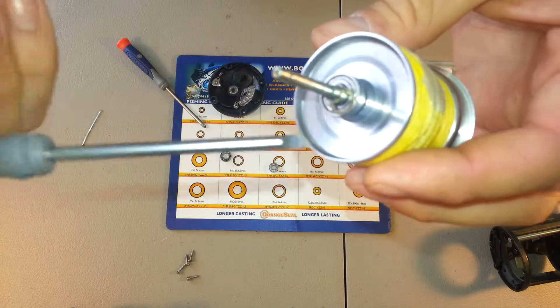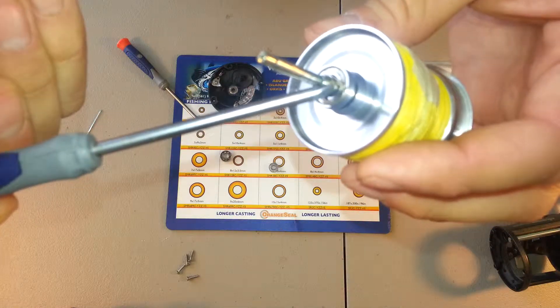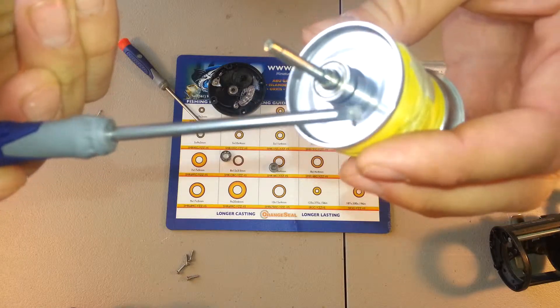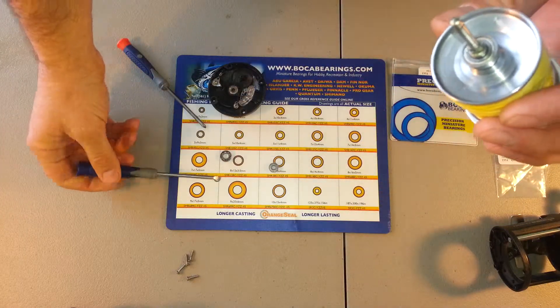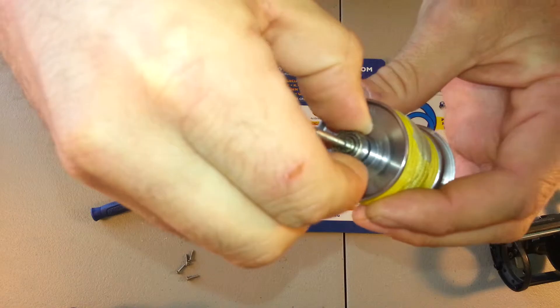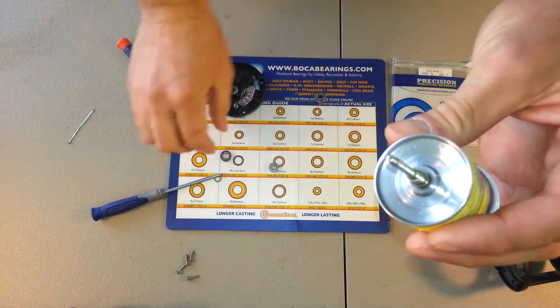On this side of the spool, there'll be a little C-clip that you'll have to pull out to get the bearing off. Screwdriver will pop it right out. Bearing just comes right off the spool shaft.